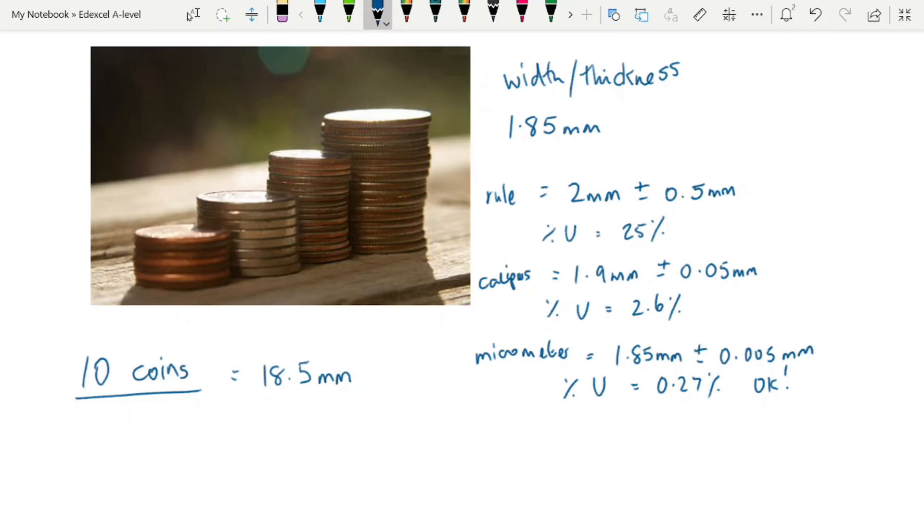That would mean that 10 coins would be 18.5 millimeters. That is still within the range of a micrometer. So instead of just measuring 1, you can stack your coins, one on top of each other, up to 10, measure it using the micrometer, and do it that way. So let's have a look at our three instruments now.